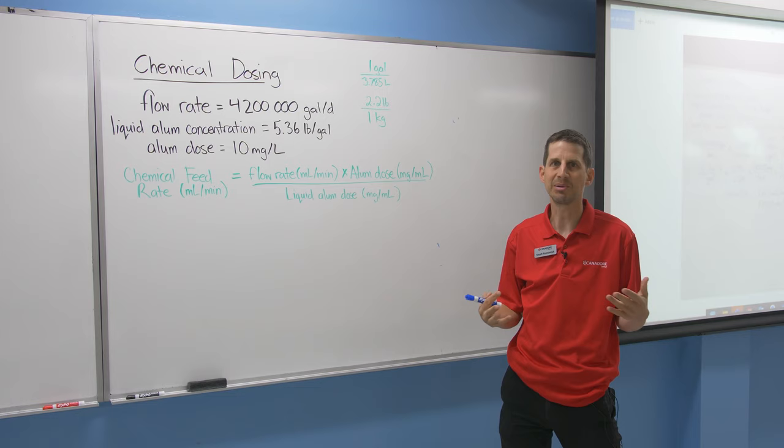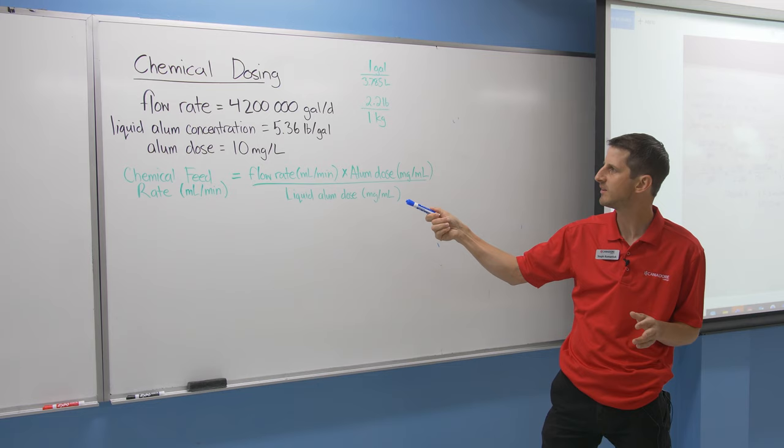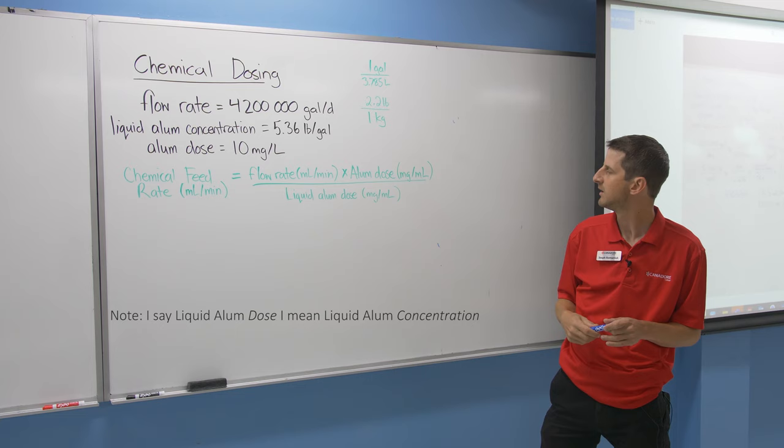As you get more familiar with working in the plant, these numbers will make sense, and other operators can help if you get confused. The formula for chemical feed rate equals flow rate times the dose divided by the liquid alum dose.